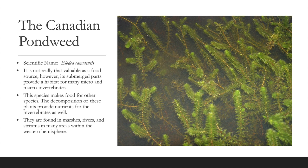Canadian pondweed is submerged and not particularly valuable as a food source, but it provides habitat for many micro and macro invertebrates. This species produces food for other species, and decomposition of these plants provides nutrients for invertebrates. They are found in marshes, rivers, and streams throughout much of the Western Hemisphere.